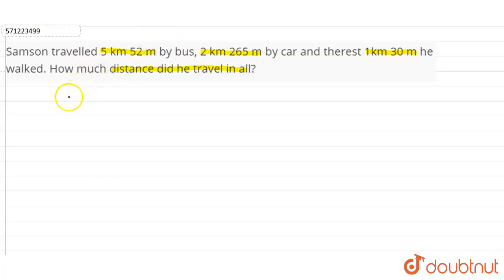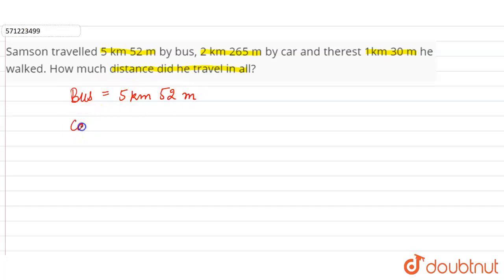Distance covered by Samson by bus is 5 kilometer 52 meter. Distance covered by car is 2 kilometer 265 meter.